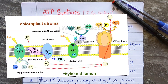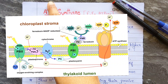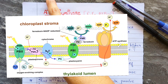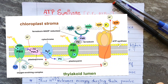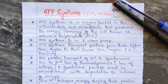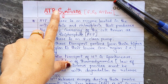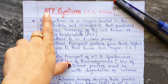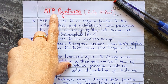As you can see in the diagram, this is the exact location and orientation of ATP synthase. The function of ATP synthase, as the name indicates, is to synthesize ATP. ATP is an energy molecule; the full form of ATP is adenosine triphosphate.